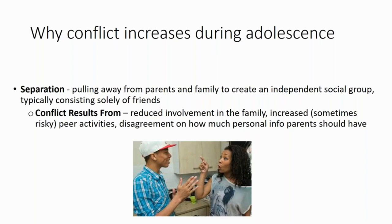During the teenage years, peers have a much larger influence on the interests, activities, as well as attire that teens engage in. As a result of teens' growing autonomy, adolescents often try to gain more privacy from their parents, will often withdraw to their rooms, and communicate less with their parents about things that are going on in their daily lives — negative experiences they might be having with peers. And this separation can really lead to conflict over the teens having a reduced involvement in the family.